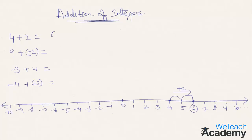The next example is 9 plus minus 2. As you have already guessed, you need to first mark the number 9 on the number line and move two steps towards the left. The answer is 7.